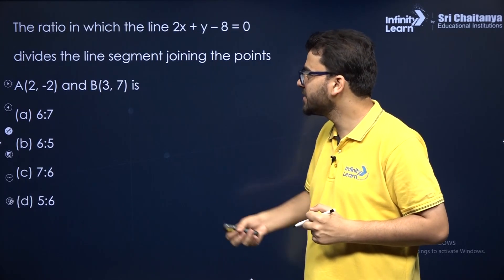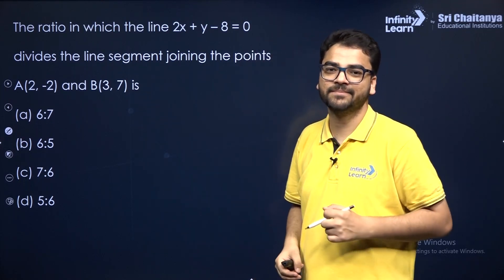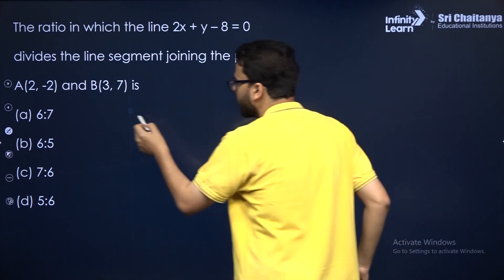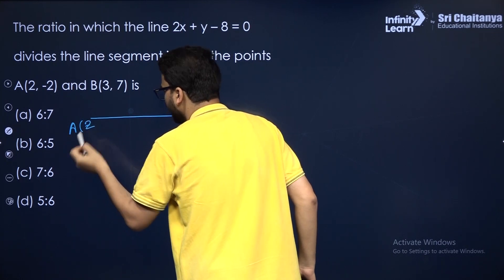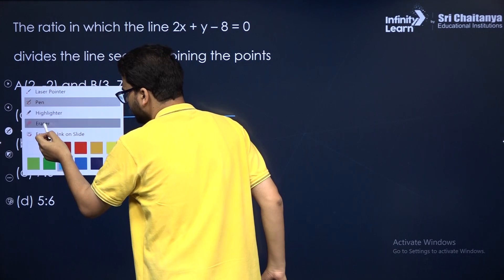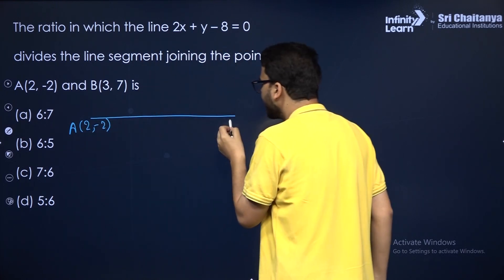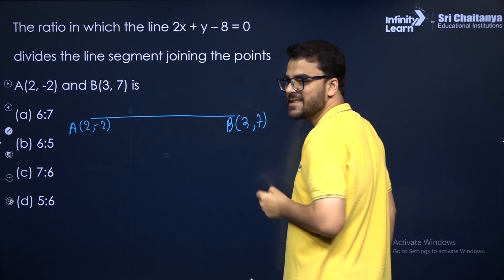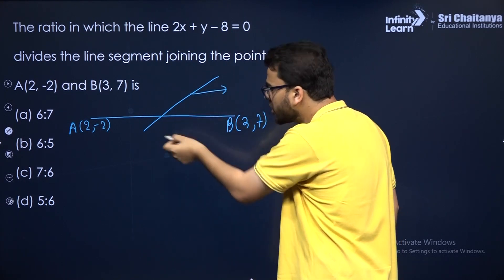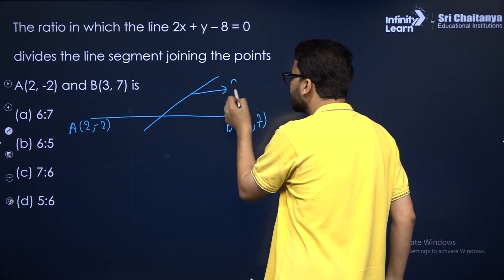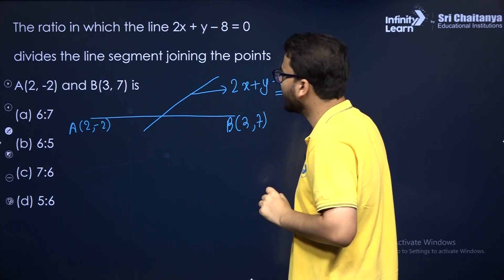Let us take the next MCQ. The ratio in which this line divides the line segment joining two points. It is given that you have a line segment joining point A at (2, -2) and point B at (3, 7), and it is getting divided by a line. The equation of this line is 2x plus y minus 8 equals 0.